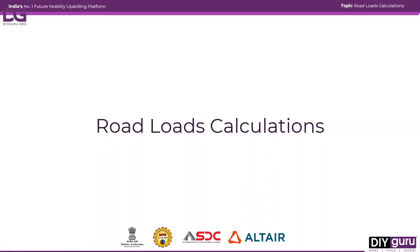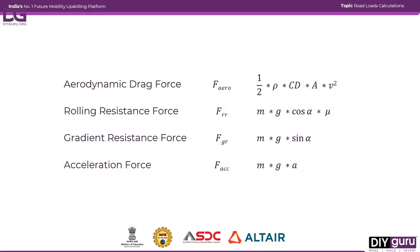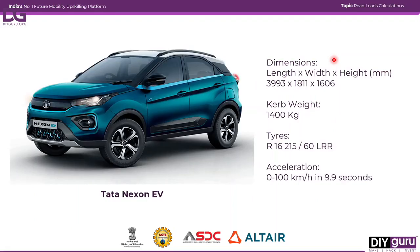In this video we will do some basic road load calculations. For a quick revision, we have seen the different resistive forces or road loads acting on the vehicle: aerodynamic drag force, rolling resistance force, gradient resistance force, and acceleration force. We have already seen how these equations came about, and these are the equations for them. Now we will solve for each one.